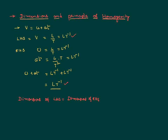The principle of homogeneity simply tells you that when you write a physics equation, the dimensional formula of the LHS equals the dimensional formula of the RHS. It tells you that you can only add physical quantities of similar nature. You can add one velocity to another velocity and get a velocity, but adding a velocity to an acceleration is meaningless.